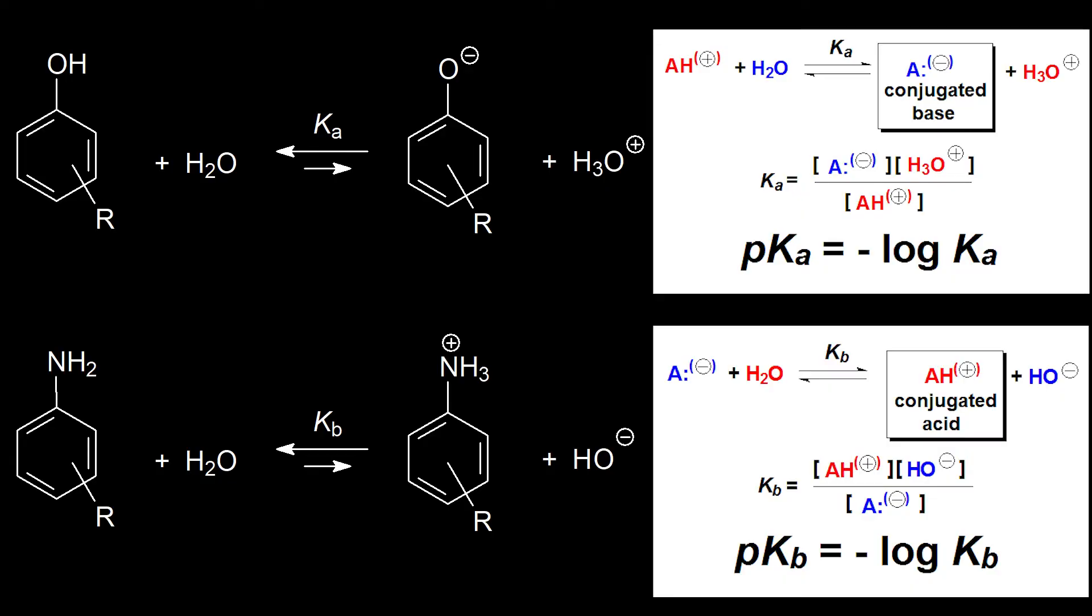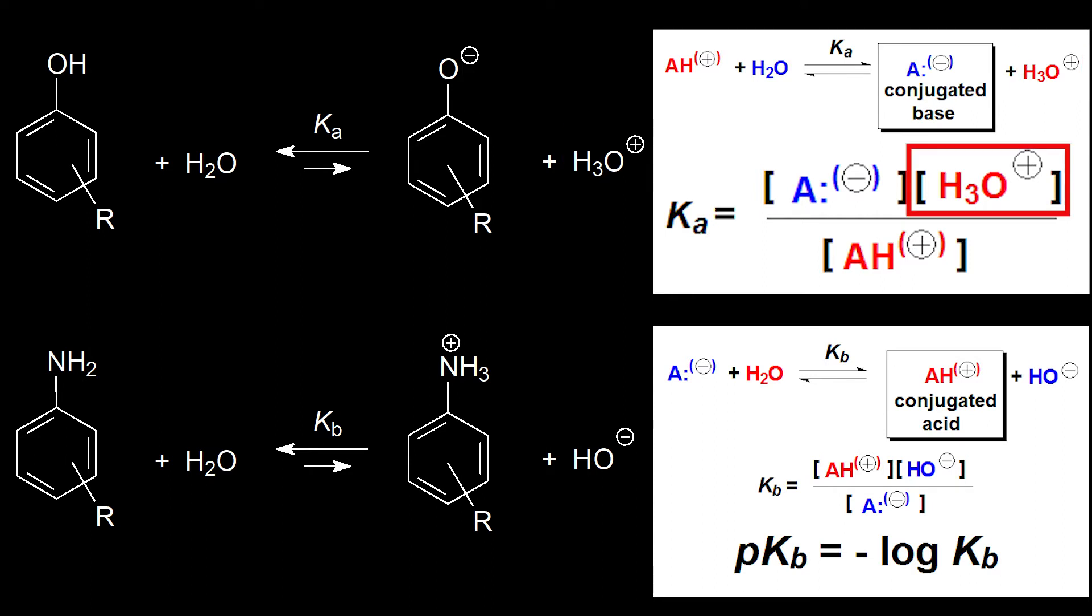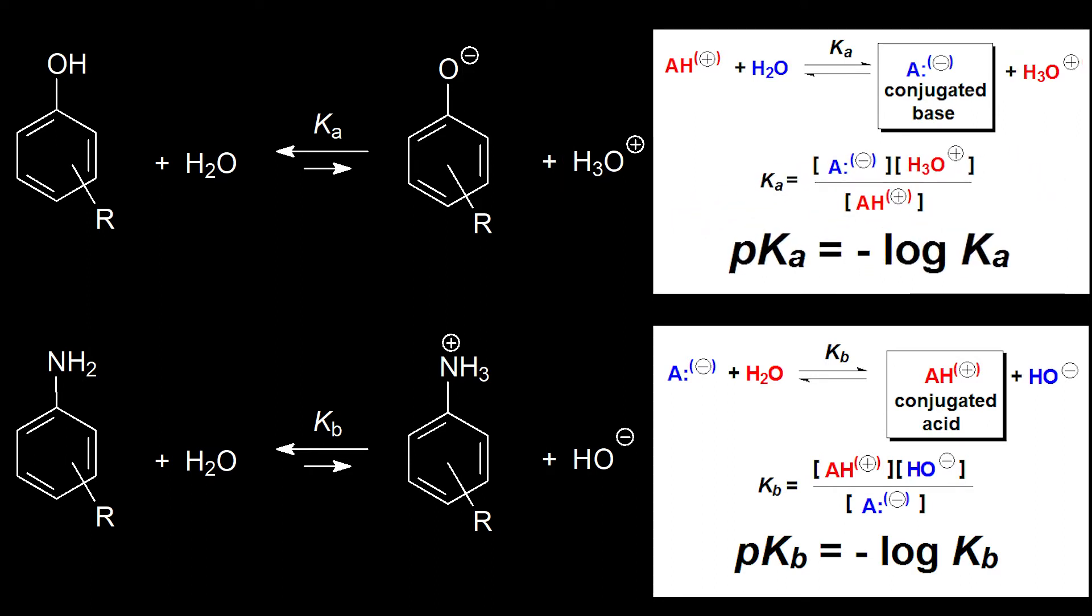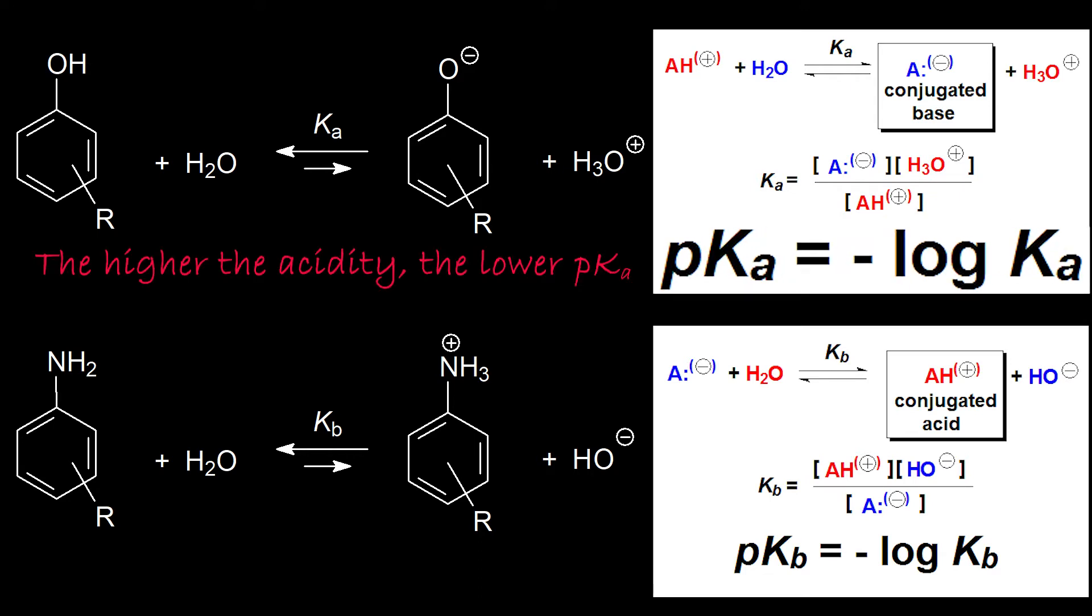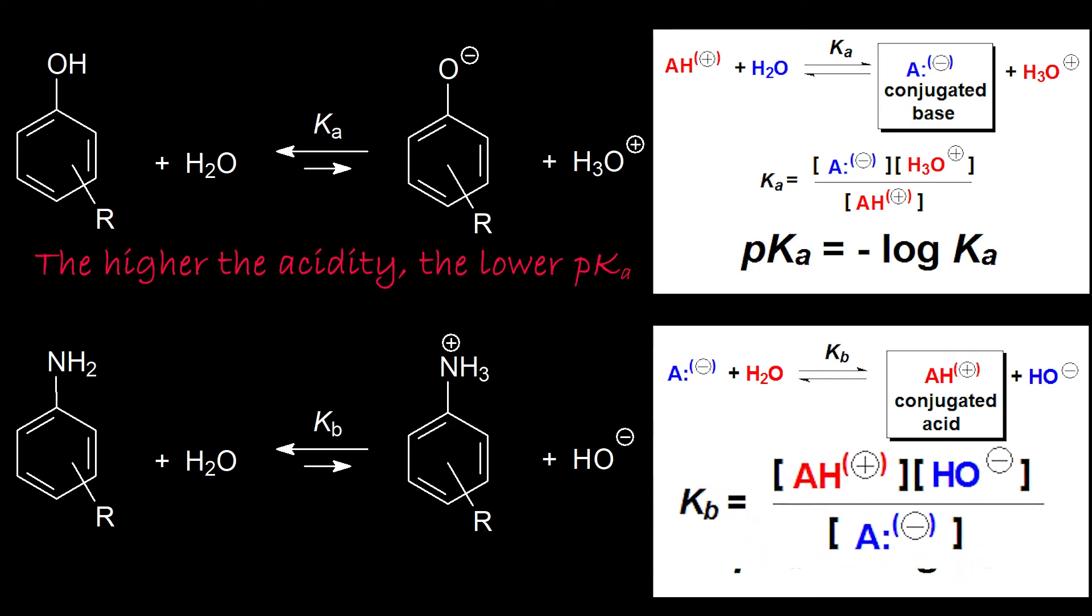Let's recall first pKa and pKb definitions. The larger the Ka value, the more shifted the equilibrium towards protons formation and the higher the acidity. However, since pKa is the negative logarithm of Ka, the higher the acidity, the lower the pKa.